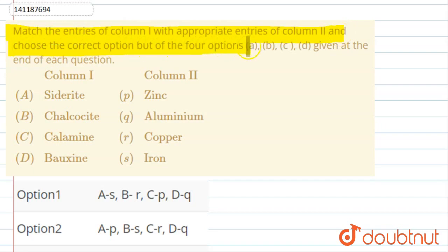All four options A, B, C, D are given at the end of each question. Column 1 has ores or minerals, and column 2 has what they contain.